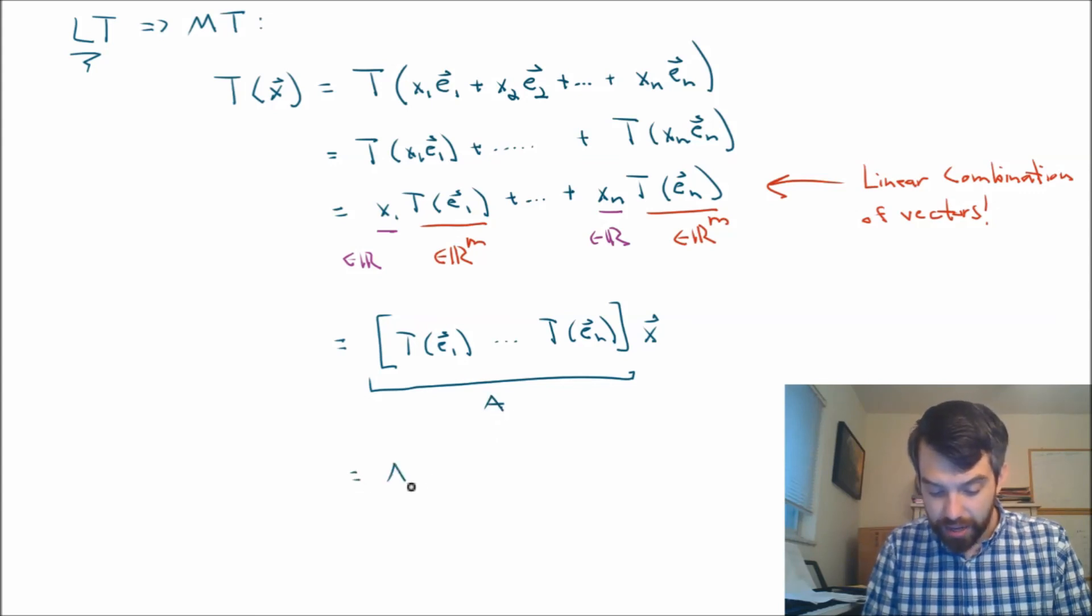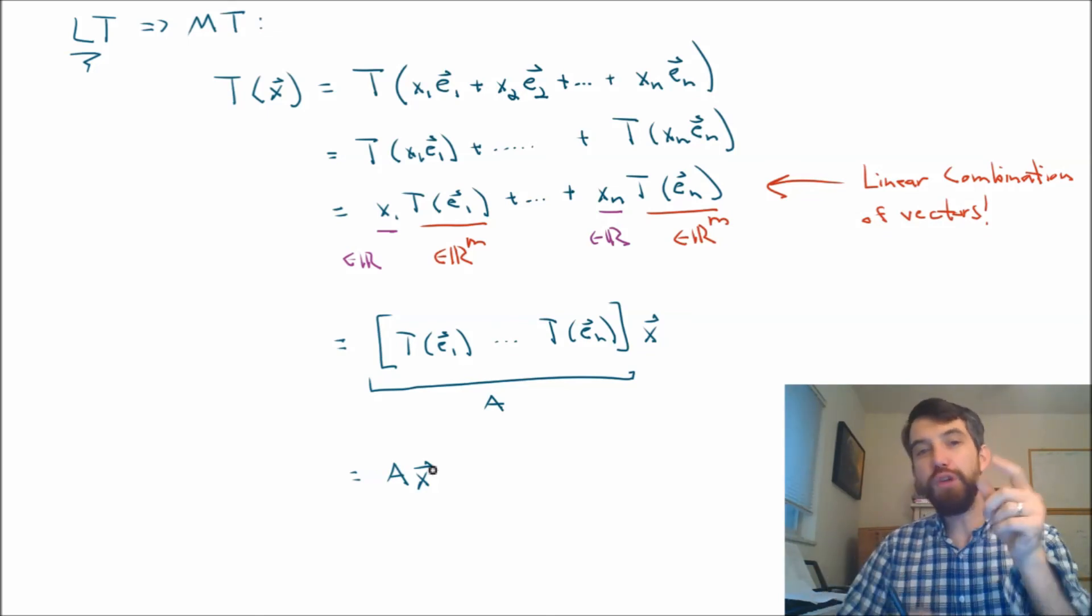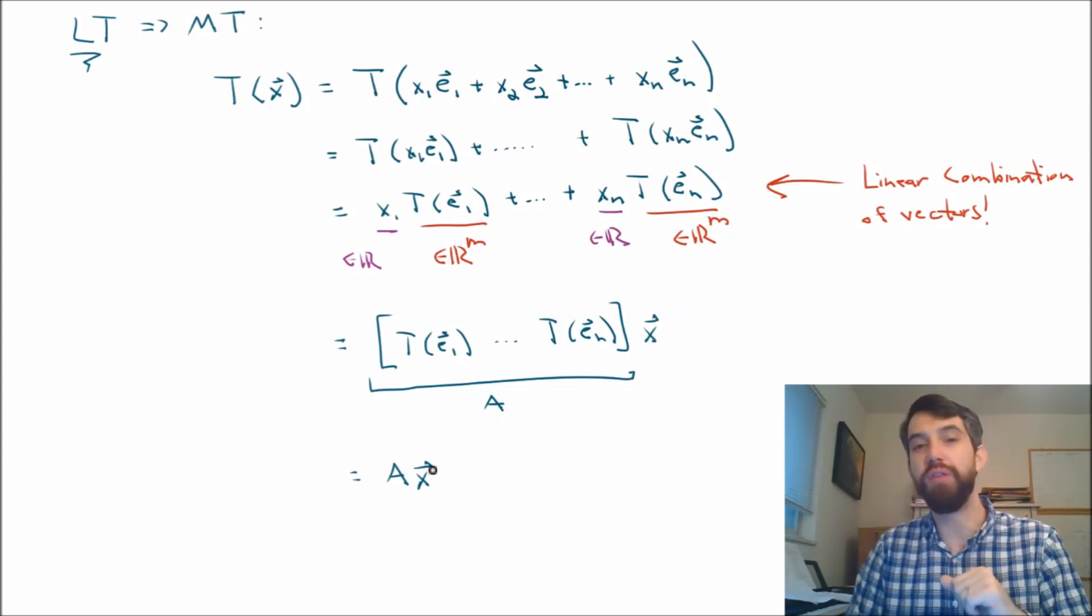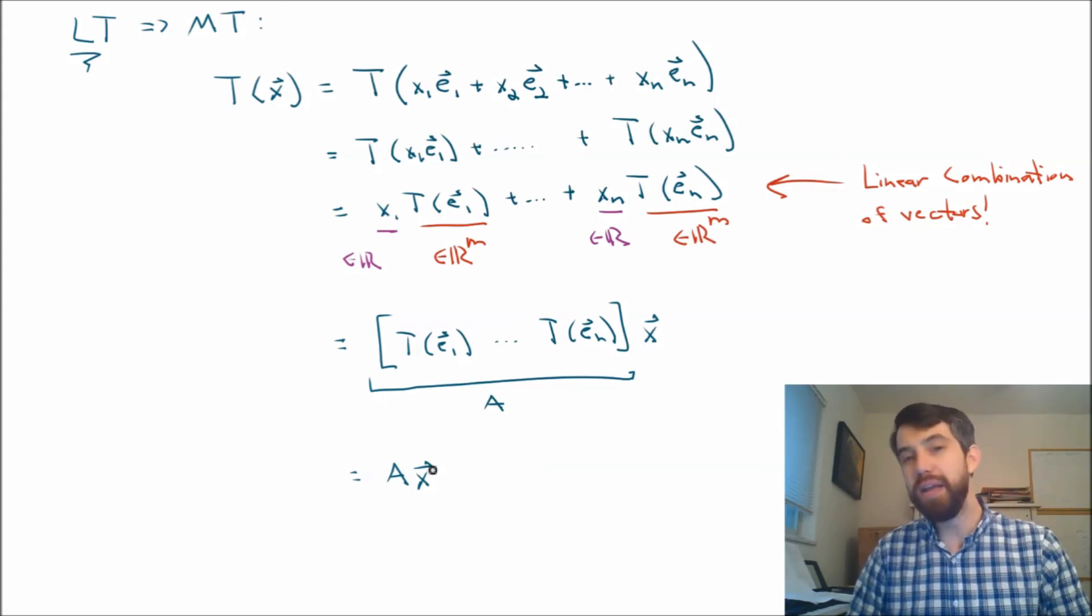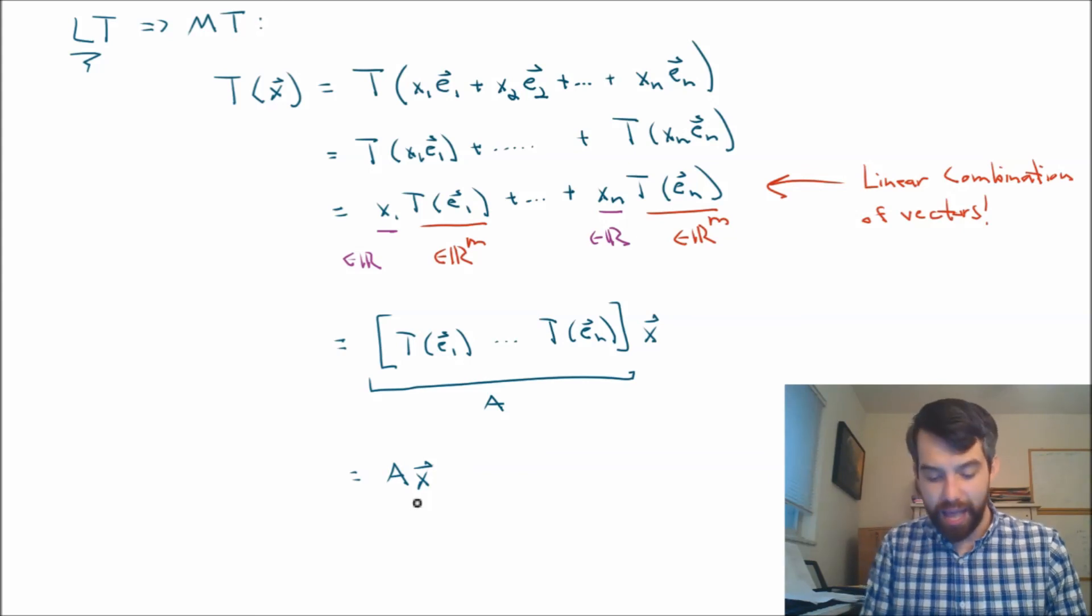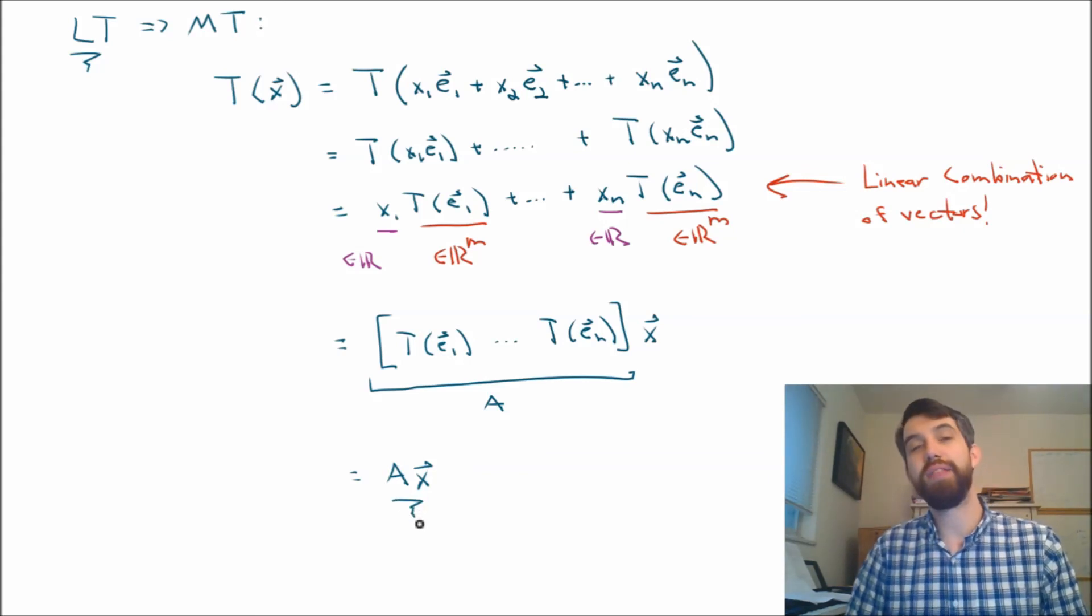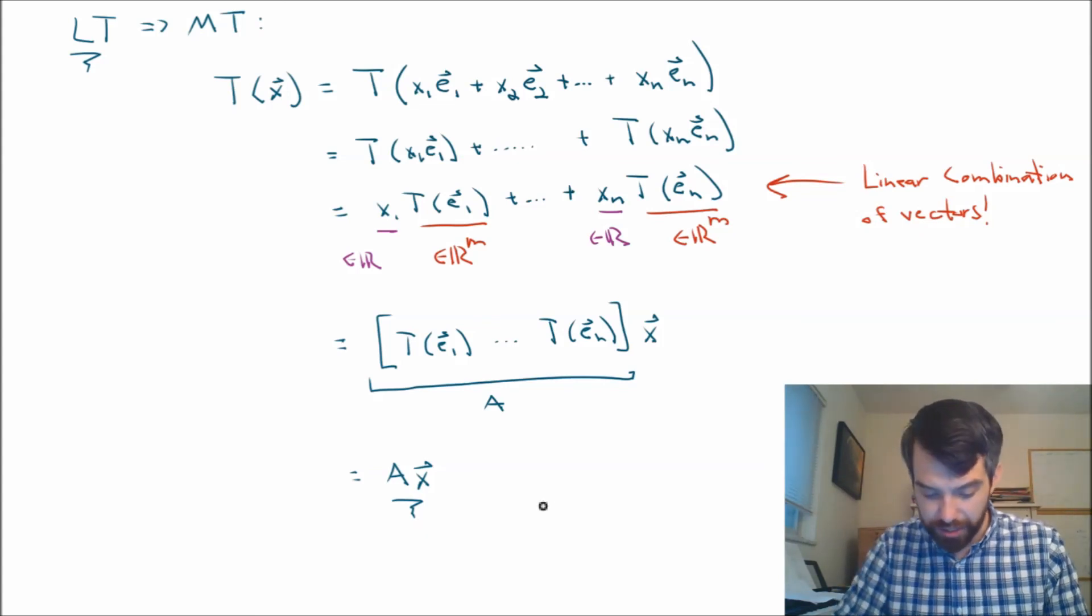And then what I'm going to get is that this is just equal to Ax. In other words, if you give me a linear transformation, I can go and compute T of e1, T of e2, T of en. That's sort of a bunch of different vectors. I could compute those out if you gave me the transformation explicitly. And then from those, I could tell you a matrix A. I could find for you a matrix A such that the transformation applied to x was just the same thing as multiplying the vector x by this matrix A. And so, we have proven what we set out to. Linear transformations are precisely, it goes in both directions, the matrix transformations.